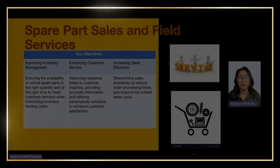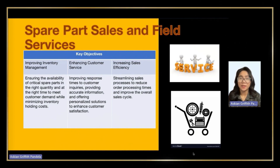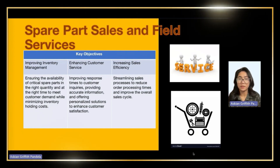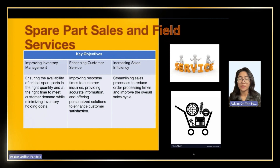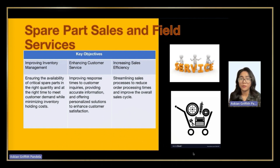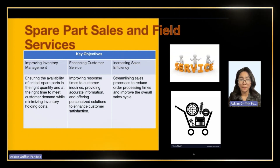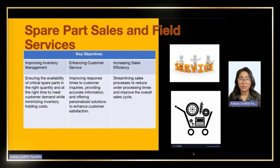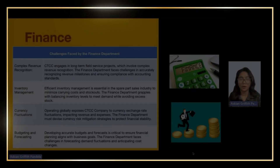The spare parts sales department manages spare parts orders, inventory, customer inquiries, and after-sales support. This case study analyzes CTCC's spare parts sales department to identify strengths, weaknesses, and opportunities for improvement. Key objectives include improving inventory management to ensure timely availability of critical spare parts, enhancing customer satisfaction through faster response times, and increasing sales efficiency by simplifying sales processes to reduce processing times and improve the overall cycle.